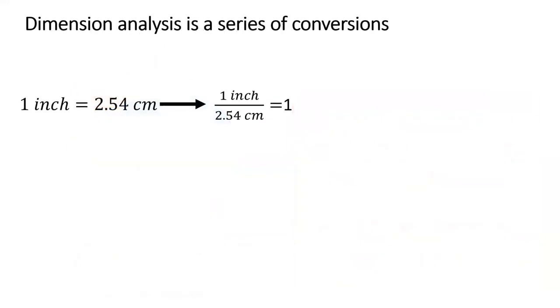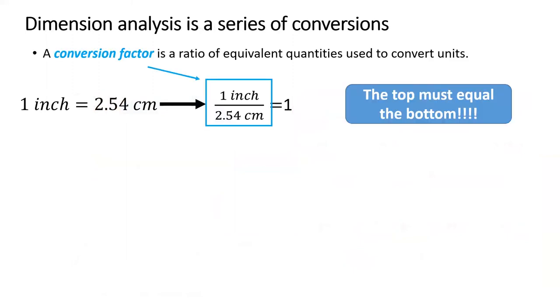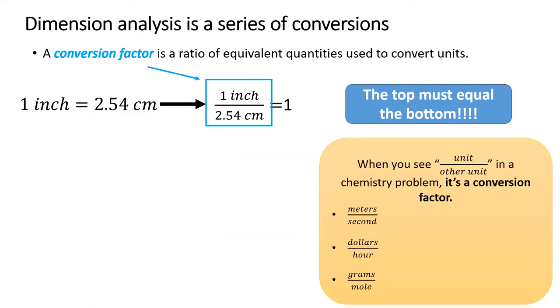We'll set up a dimensional analysis problem as a series of one or more conversions. The bread and butter of dimensional analysis are these conversion factors. We can form a conversion factor out of an equivalency, such as one inch equals 2.54 centimeters. And many conversion factors will be given to you in the problem. Any time you see a number with units expressed as a fraction, boom, circle that, it's a conversion factor.